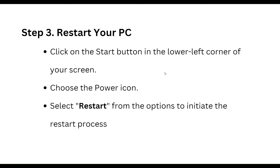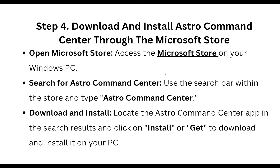Step four is to download and install the Astro Command Center through the Microsoft Store. Open the Microsoft Store on your Windows PC and search for Astro Command Center using the search bar. Locate the Astro Command Center app in the search results and click the button to install or get it to download and install on your PC.